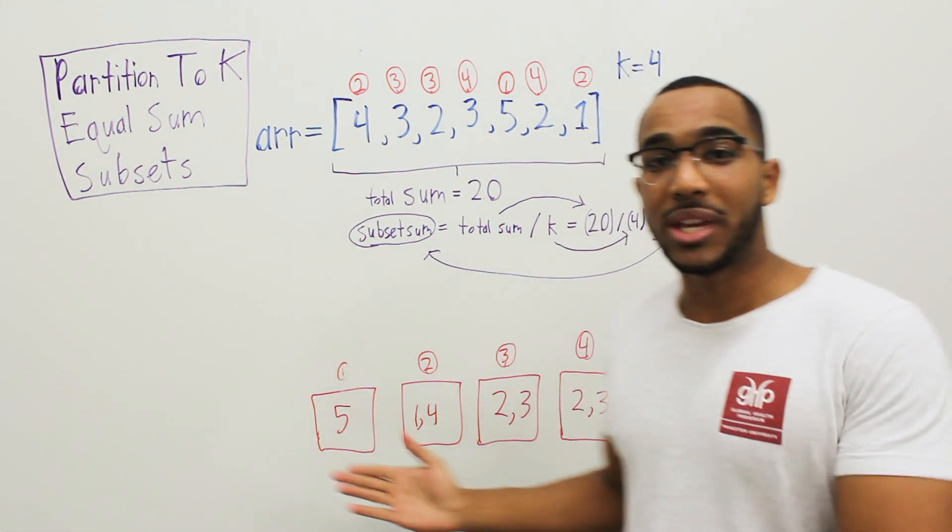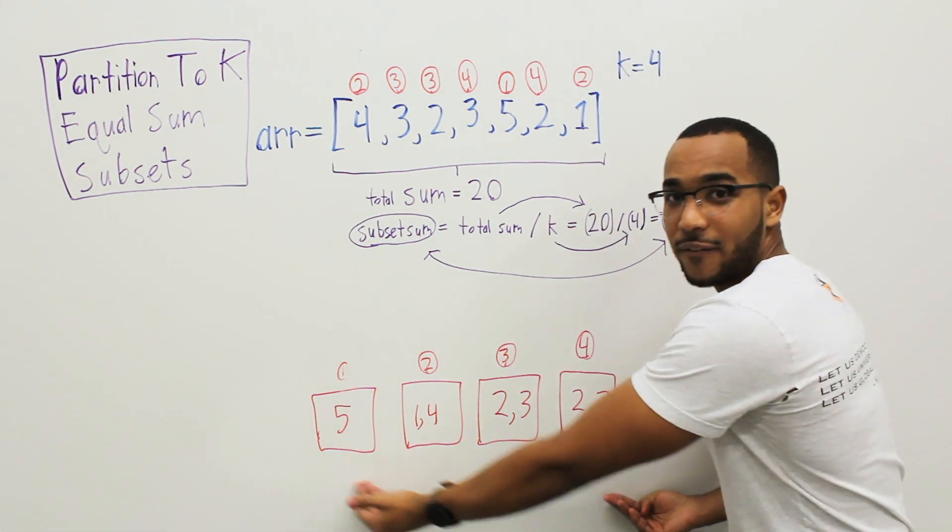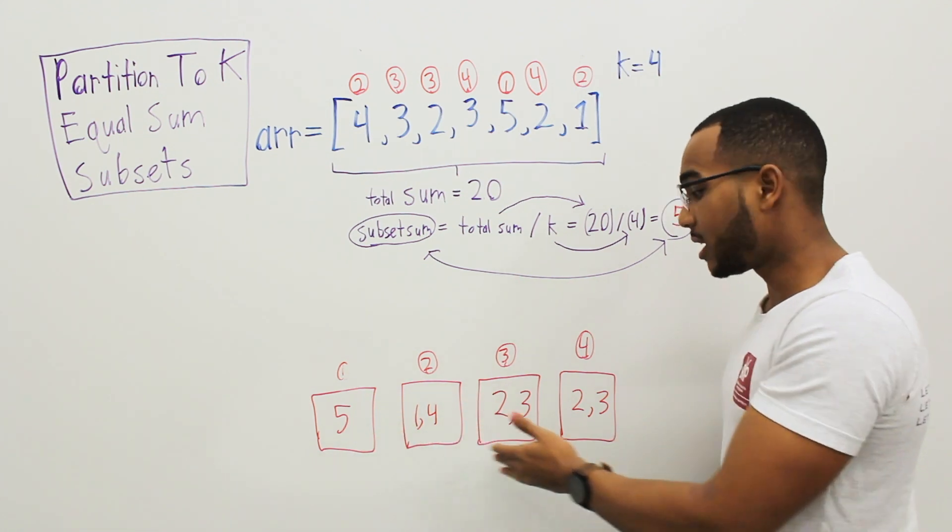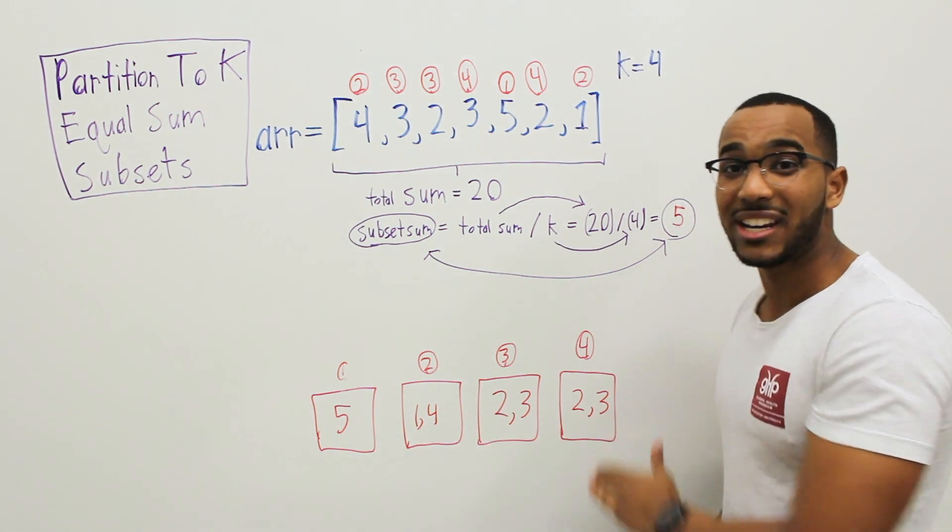As we can see here, we can see that our answer looks like this. 4 buckets. We put 5 in here, 1 and 4 in here, 2 and 3 in here, 2 and 3 in here.